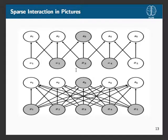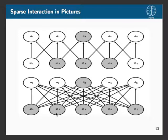You can see sparse interactions in this picture. For a net with a convolutional layer, s3 is only affected by x2, x3, and x4. Whereas in a traditional fully connected layer, all inputs from x1 to x5 would impact it — that's many more weights and much less generalization.